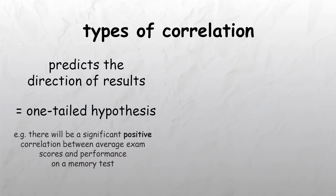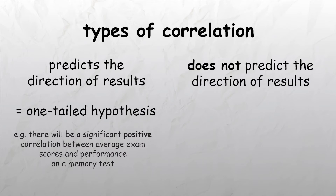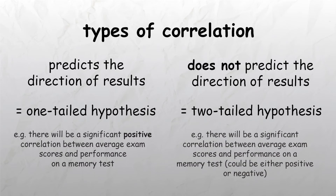When a hypothesis does not predict the expected direction of a result, it is referred to as a two-tailed hypothesis. For example, a two-tailed hypothesis might be that there will be a significant correlation between average exam scores and the performance on a memory test, but it doesn't say whether the correlation will be positive or negative.